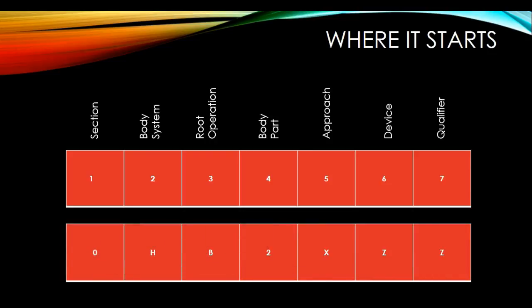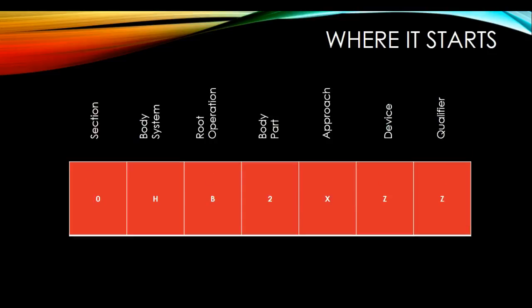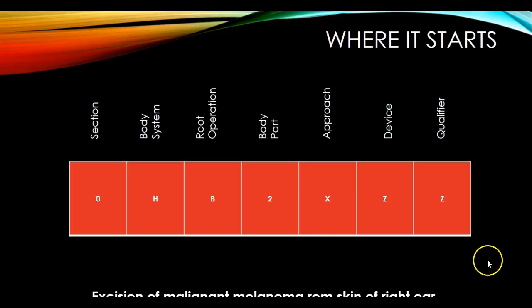Here we have an actual PCS code: 0HB2XZZ. Let's see what that code means. 0HB2XZZ is the code for the excision of a malignant melanoma from the skin of the right ear. Let me show you how we got there.